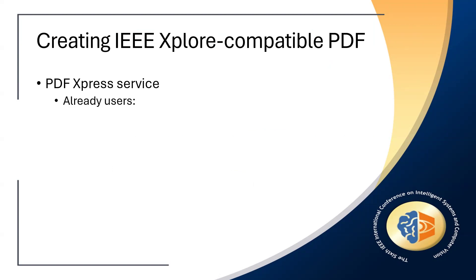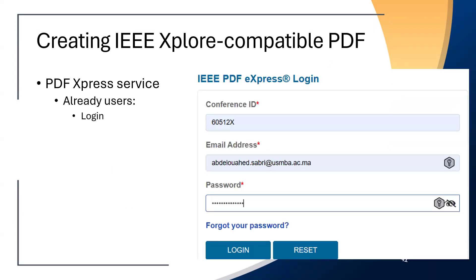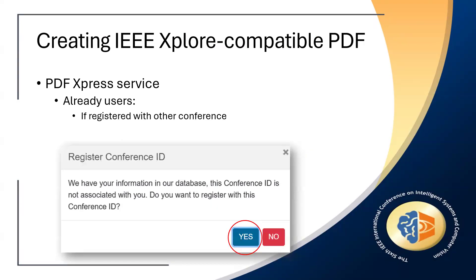If you already have an account in PDF Express with other conferences, you don't need to create a new one. Login using the ESCV PDF Express conference ID, your email address and password. If you don't remember your password, you can reset it by clicking the link Forgot your password. You will be asked to fill in your email address and a reset password link will be sent to your email. For older users who created their account for other conferences, you will be asked to register your account with this conference, so just click yes.